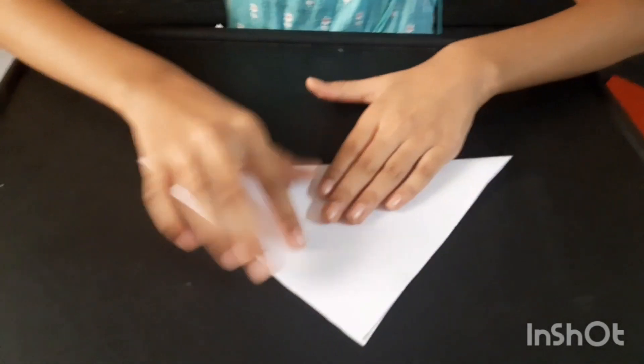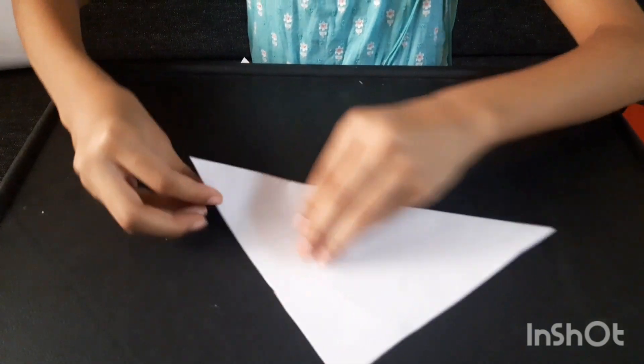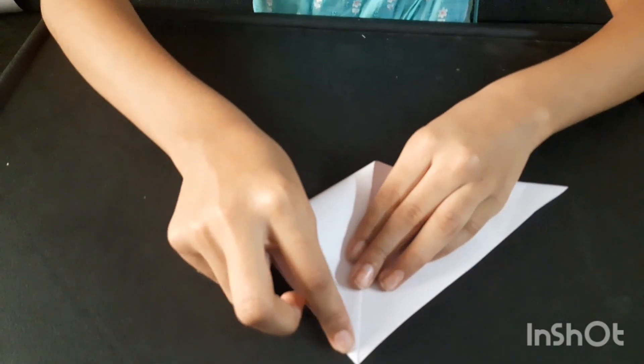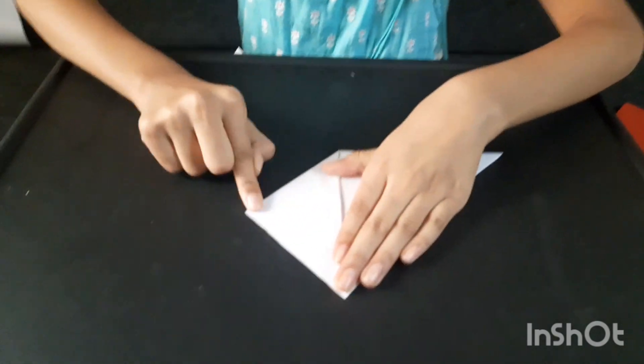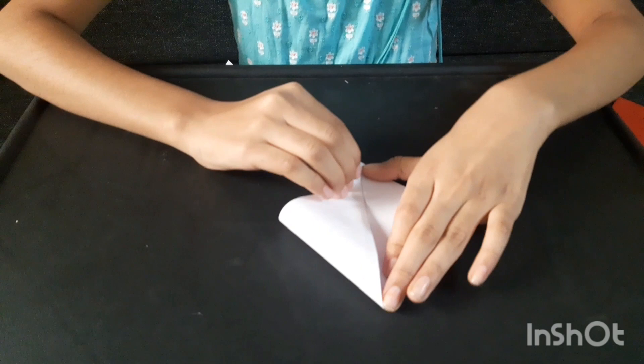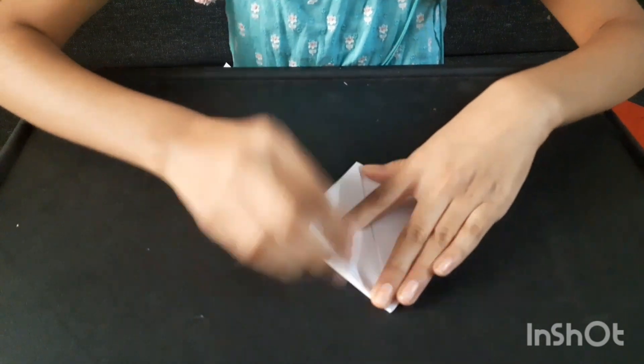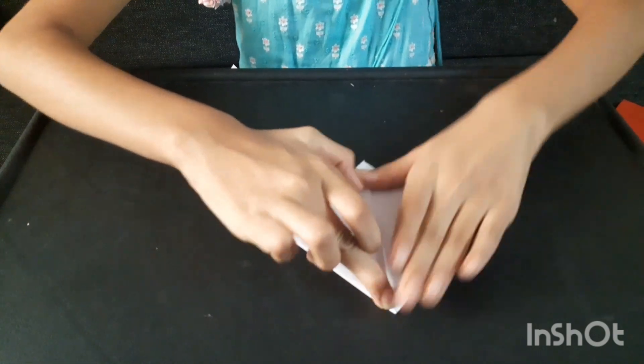Now we have to cut the A4 sheet. Now we will fold it like this, this corner to the top, press it, and it goes there.